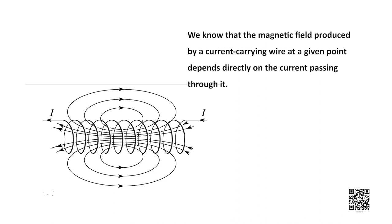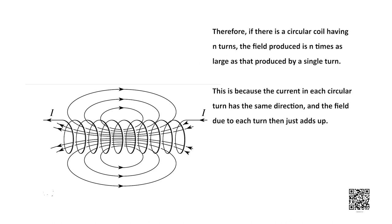The magnetic field produced by a current carrying wire at a given point depends directly on the current passing through it. Therefore, if a circular coil has n turns, then the field produced is n times as large as produced by a single turn of wire. This is because the current in each circular turn has the same direction, and the field due to each turn adds up.